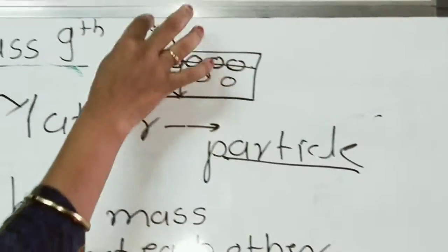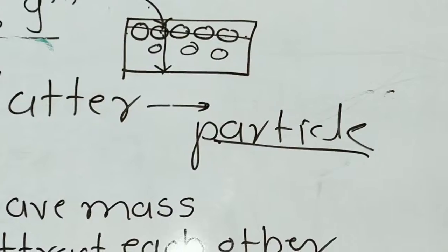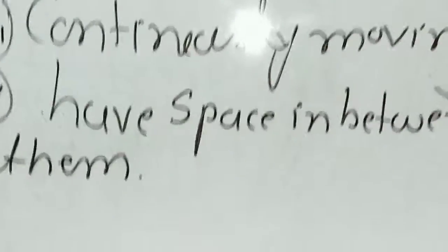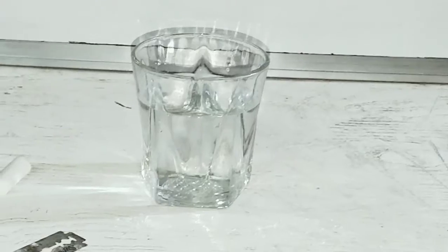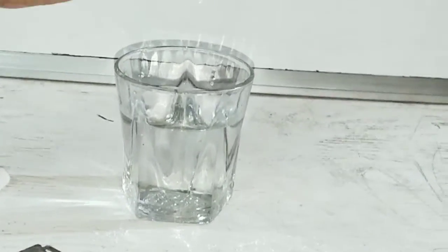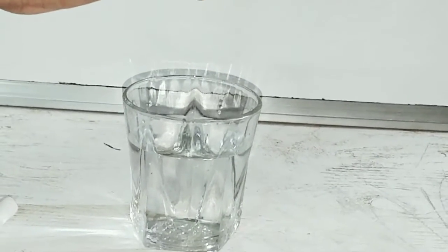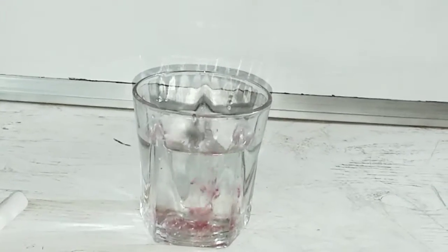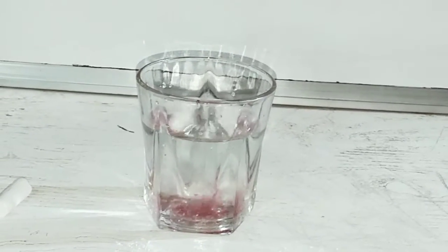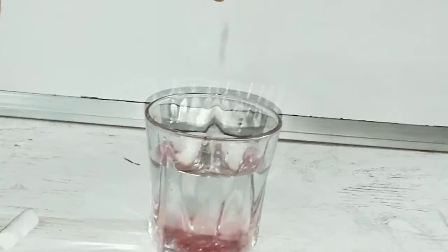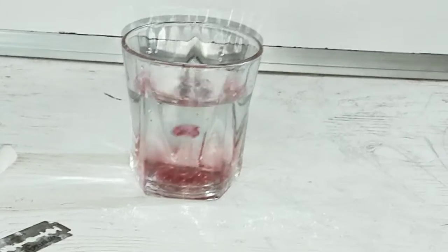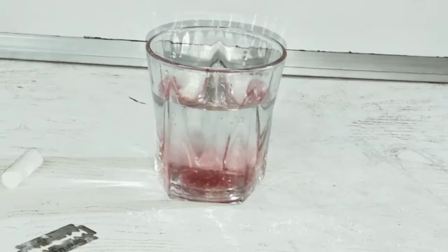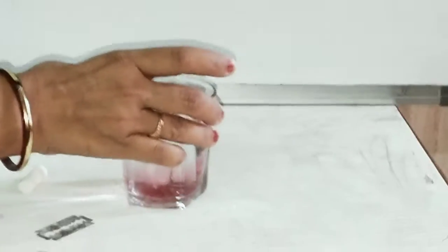Observe how each and every drop gets mixed with the water. You can observe it continuously — they mix with the water. Observe the color becoming faint pink, and the entire drop mixes with the water. Why? Because these particles are continuously moving. From this activity, you understand that particles are continuously moving.